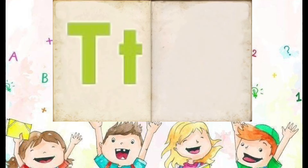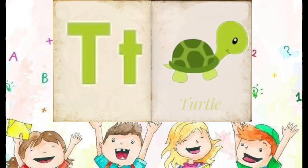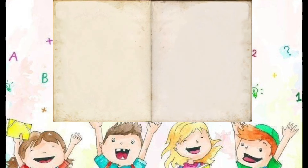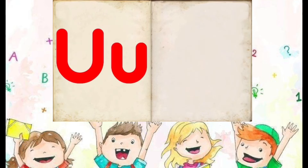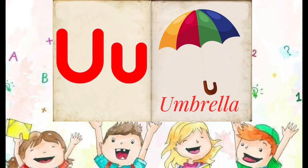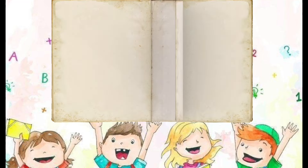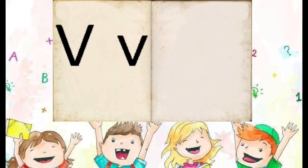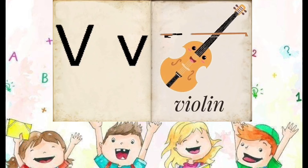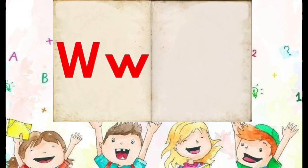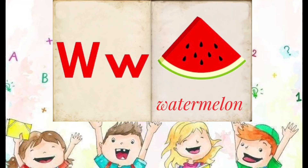T is for Turtle, U is for Umbrella, V is for Violin, W is for Watermelon.